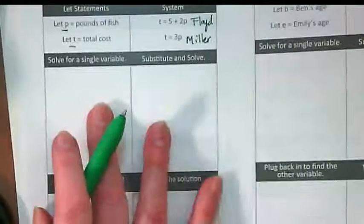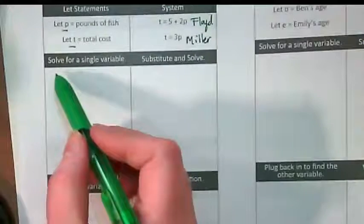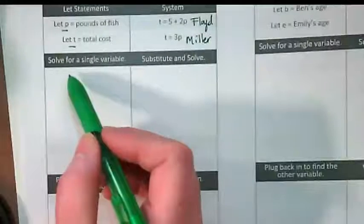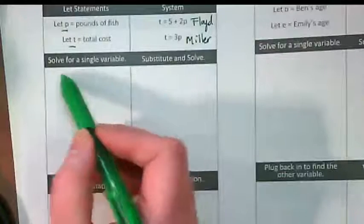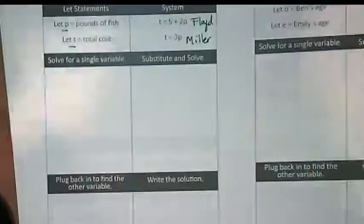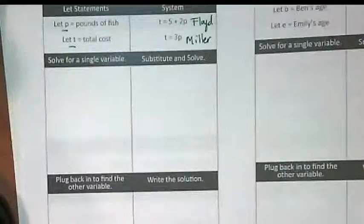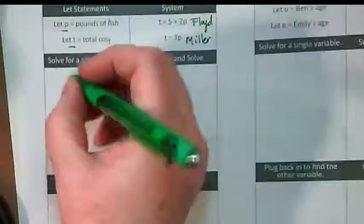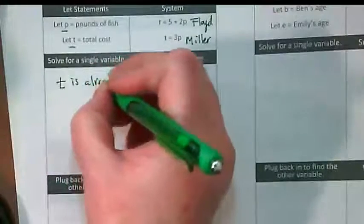Let's use our graphic organizer to go through the process of solving a system. When we're using substitution like we've been practicing, the first thing you want to do is solve one of the equations for a single variable. What do we notice here? They're both already solved for T. So let's write in here: T is already by itself.